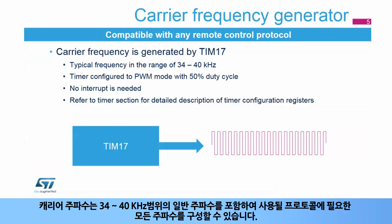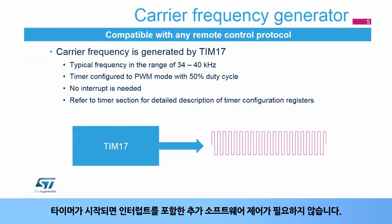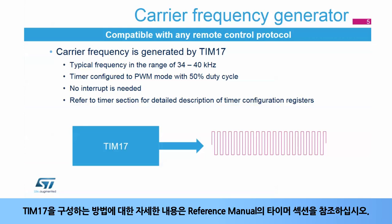Timer 17 generates the carrier frequency for the remote protocol used in the application. The carrier frequency can be configured to any frequency needed by the chosen protocol, including typical frequencies in the range of 34 to 40 kHz. This is done by configuring timer 17 into PWM mode with a 50% duty cycle. Once the timer is started, it does not require additional software control, including interrupts. For a detailed description on how to configure timer 17, please refer to the timer section in the reference manual.